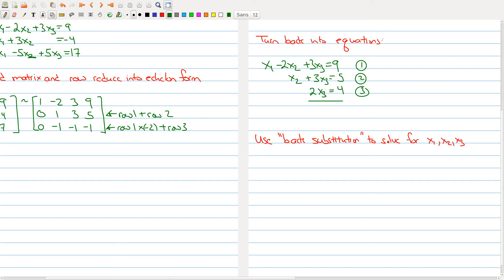So the last equation, equation 3, tells me that x3 has to be equal to 2 because 2 times x3 has to be 4. So now I'm going to substitute that information into equation 2. So that tells me that x2 plus 3 times 2 is 5. And I can rewrite that equation as x2 is equal to 5 minus 6, which is minus 1.